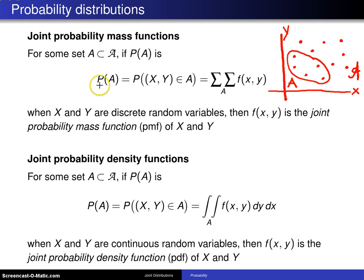Then the way I calculate P of A, which is the same as saying the probability of XY being an element of A, is I do a double summation of f of XY. Basically, I add up the joint probability mass function associated with these five points, and that's how I calculate the probability that the random variables X and Y are in upper case A.